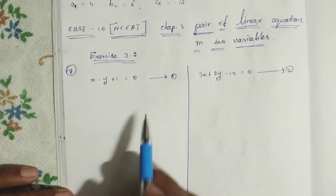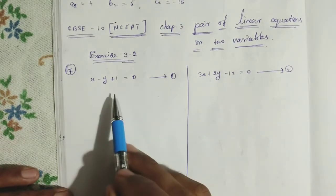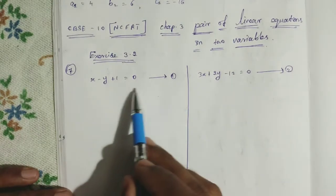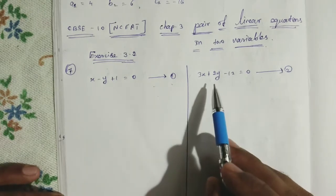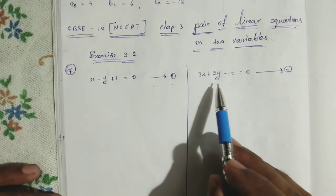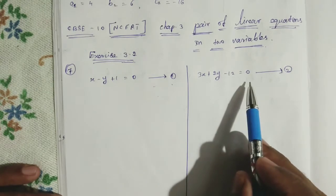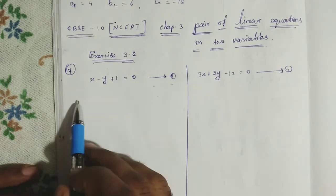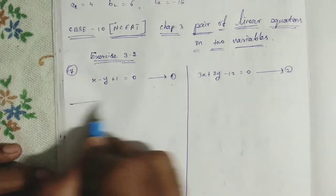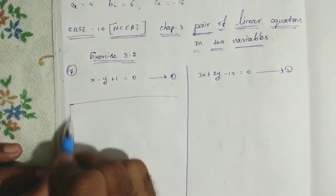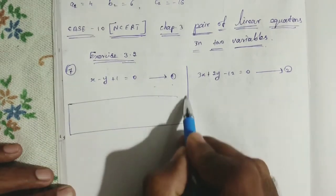These are the two equations: equation 1 is x minus y plus 1 equal to 0, and equation 2 is 3x plus 2y minus 12 equal to 0. Now we find points by making a solution table, substituting x equal to 0 and y equal to 0 for each equation.